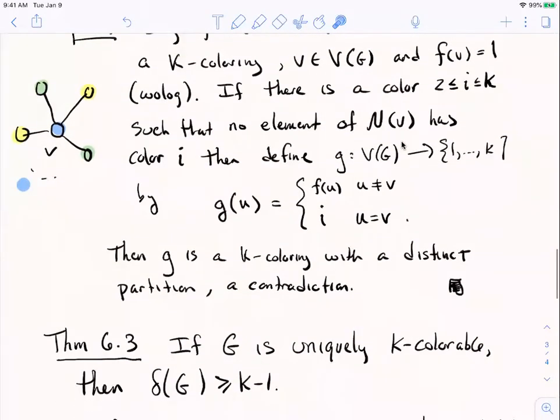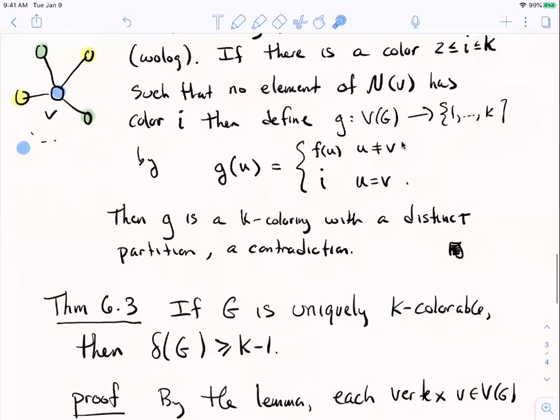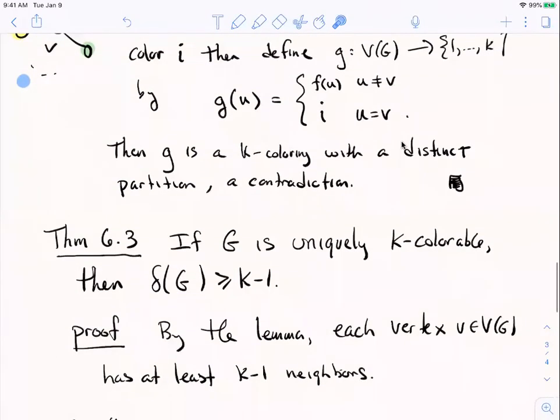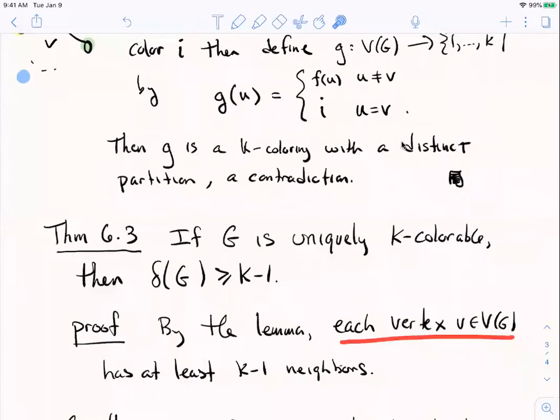So what's the theorem? The big theorem is theorem 6.3. And it follows, I mean, this was the heart of the argument. If you take a uniquely k-colorable graph, then the minimum vertex degree has to be at least k minus one. Remember this delta of G, we're consistently using it for minimum vertex degree. Capital delta is maximum vertex degree. Well, that's just a direct consequence of the lemma because we just showed that every vertex has at least k minus one neighbors because you've got to have at least k minus one colors. And we can't use two colors on a vertex or something like that. So if you have at least k minus one colors out there, you have to have at least k minus one neighbors to have those colors. You might have more. The minimum vertex degree has to be at least k minus one.